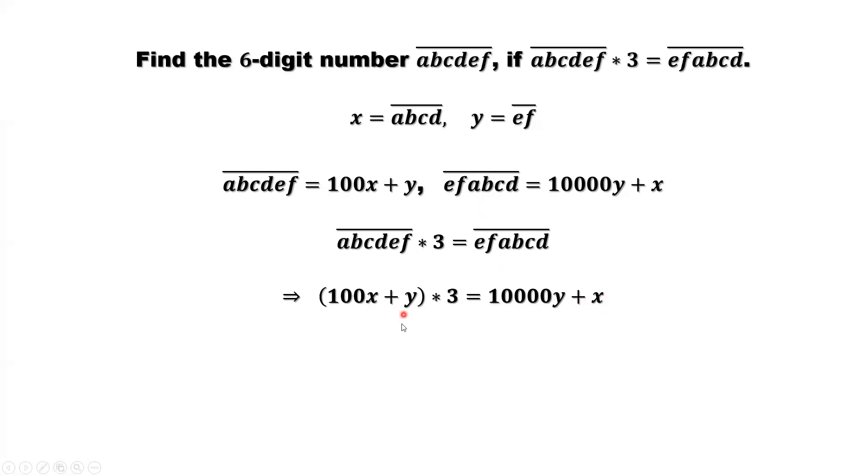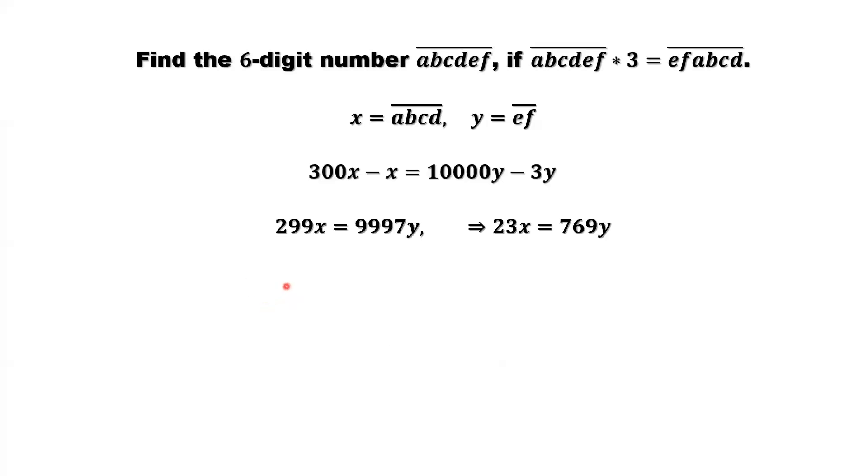Simplify, move X to the left-hand side, Y to the right-hand side. We can find and set up the relationship between X and Y. Continue to simplify. Both sides divided by 13. We have 23X equals 769Y. 23 is a prime number. 23 and 769 are mutually prime. What does this mean? 23 and 769 have no common factors.